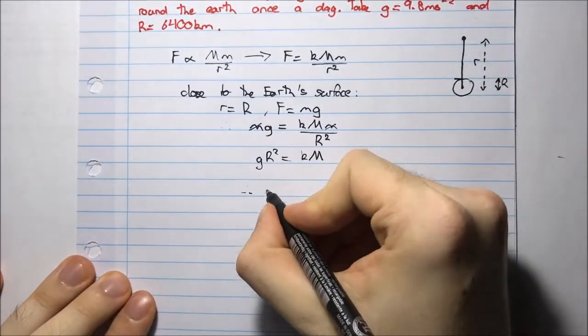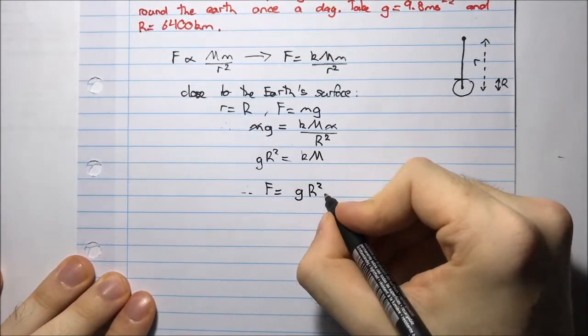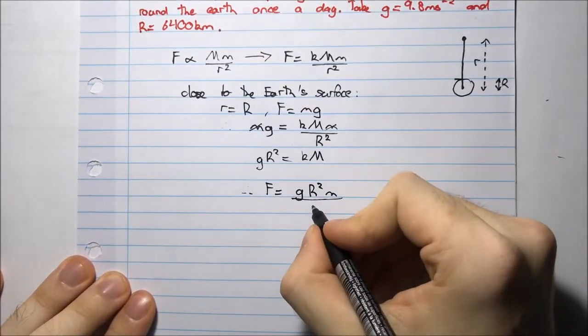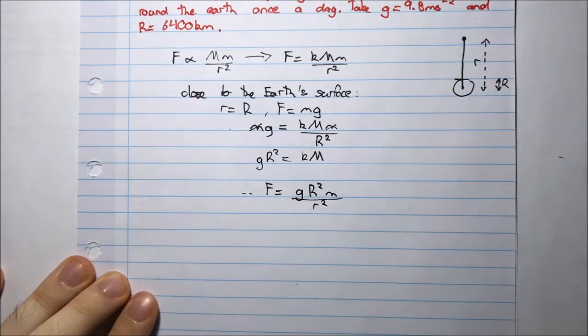So I can say, therefore, f equals little g R squared, little m divided by little r squared.